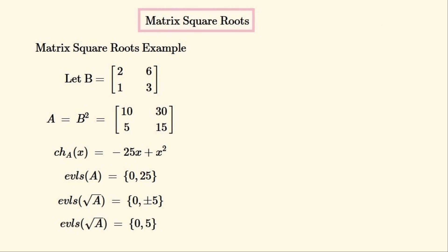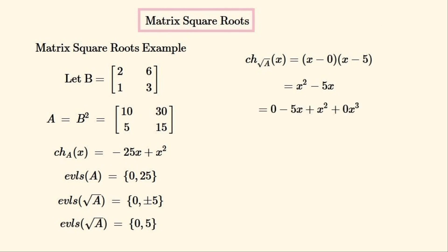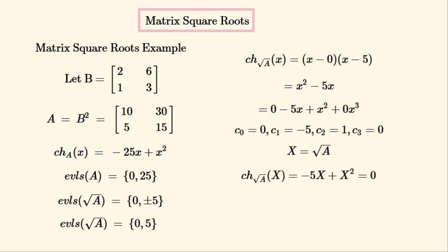The positive square root should give us matrix B. We'll construct the characteristic polynomial for the square root of A from these eigenvalues — this is the final simplified polynomial. Earlier in this video we used a degree-3 polynomial to represent the characteristic polynomial, so this is what it looks like as a degree-3 polynomial. These are the corresponding coefficients. We'll set X to be the square root of the matrix A.